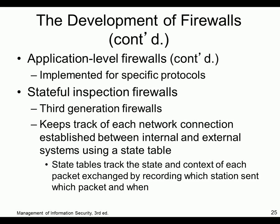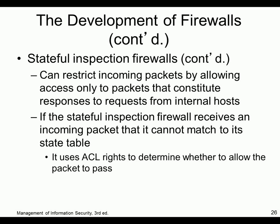Stateful firewalls keep track of each network connection using a state table. Think of it as a firewall that lets nothing through, but if you make a request for something, the answer can come back in. The state table tracks the context of each packet exchange — what was sent, where it went, where it's coming back from. So if I make a request to Google, the response from Google can come back in, but if I didn't initiate the request, nothing can get in.